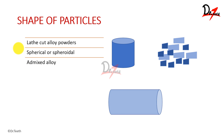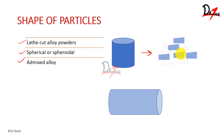Regarding the shape of particles, we have lathe cut, spherical or spheroidal, and admixed. If we take a homogeneous block of an alloy and cut it into irregular particles, that gives us the lathe cut form. These particles can be graded by size as fine grain or coarse grain — coarse grain particles are bigger in size.